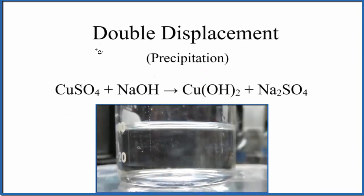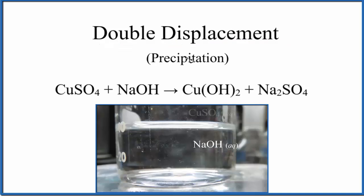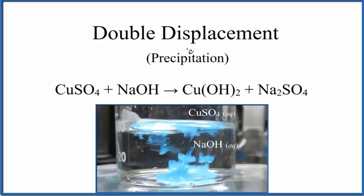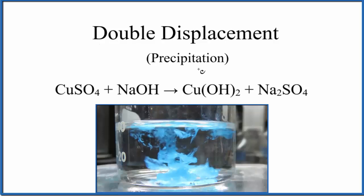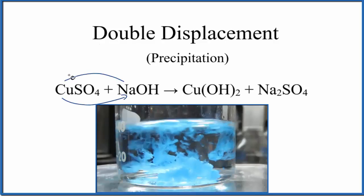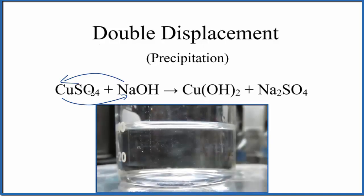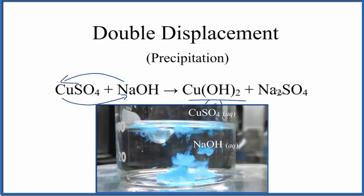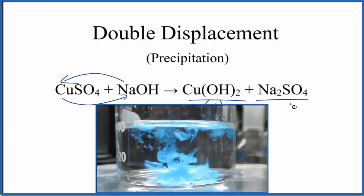We also have what are called double displacement reactions, or double replacement reactions. Because a solid is produced, these are also called precipitation reactions — a precipitate will fall to the bottom of the test tube, like you see in the video, when we have a double displacement reaction. Essentially, copper and sodium switch places. We end up with copper hydroxide, which is the solid — the blue precipitate you see in the video. The sodium ends up with the sulfate, giving us sodium sulfate, which is aqueous and stays dissolved.